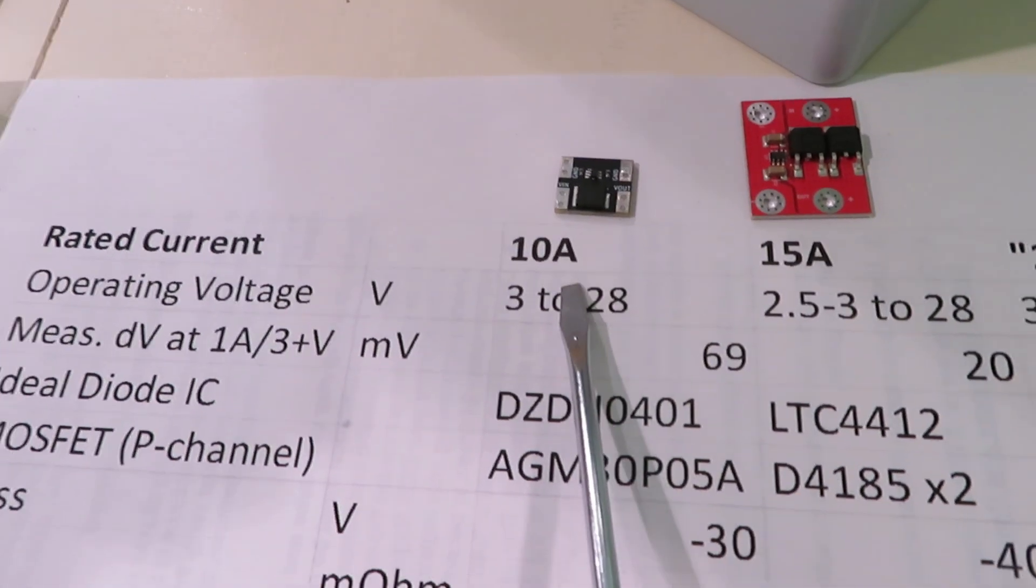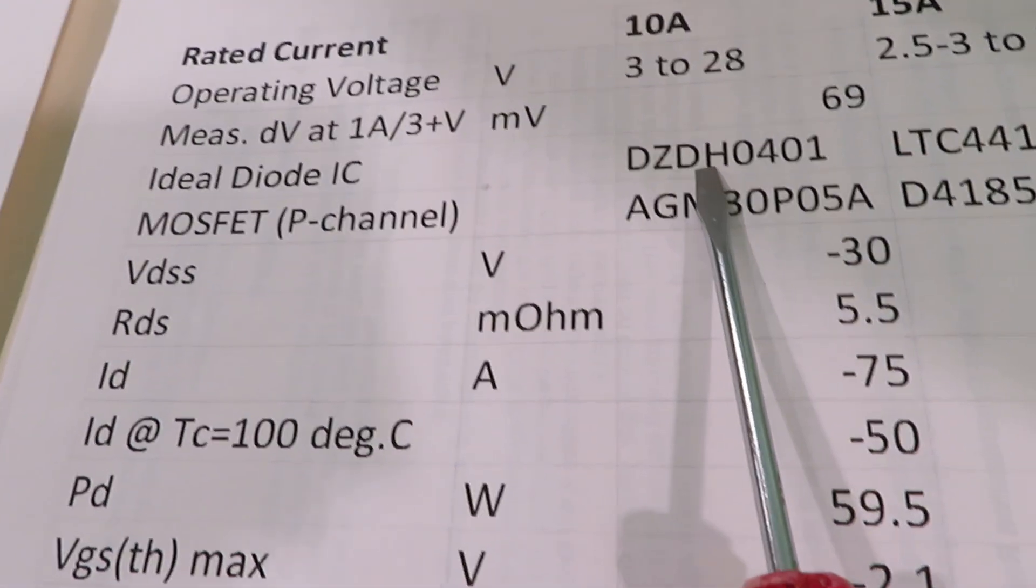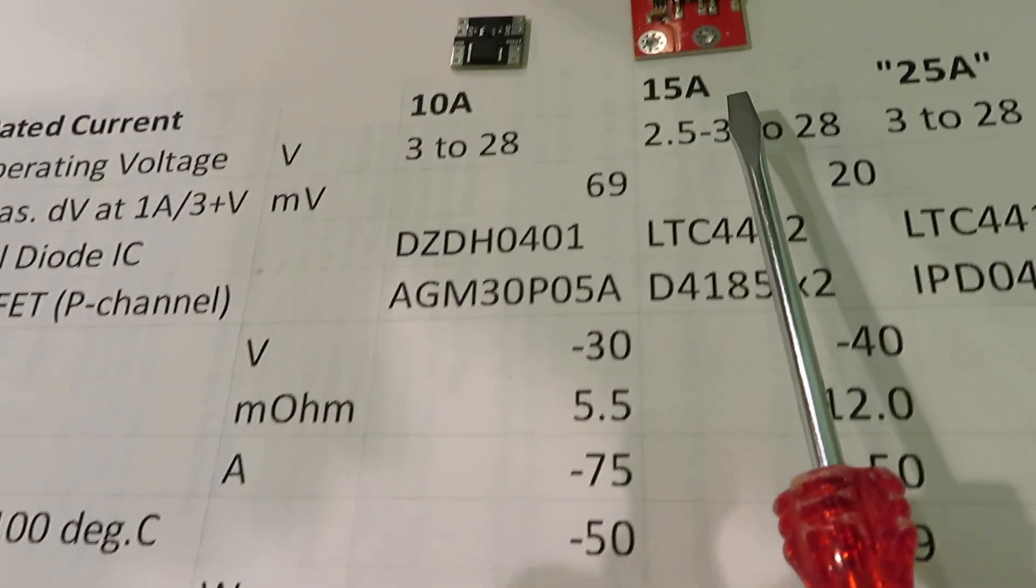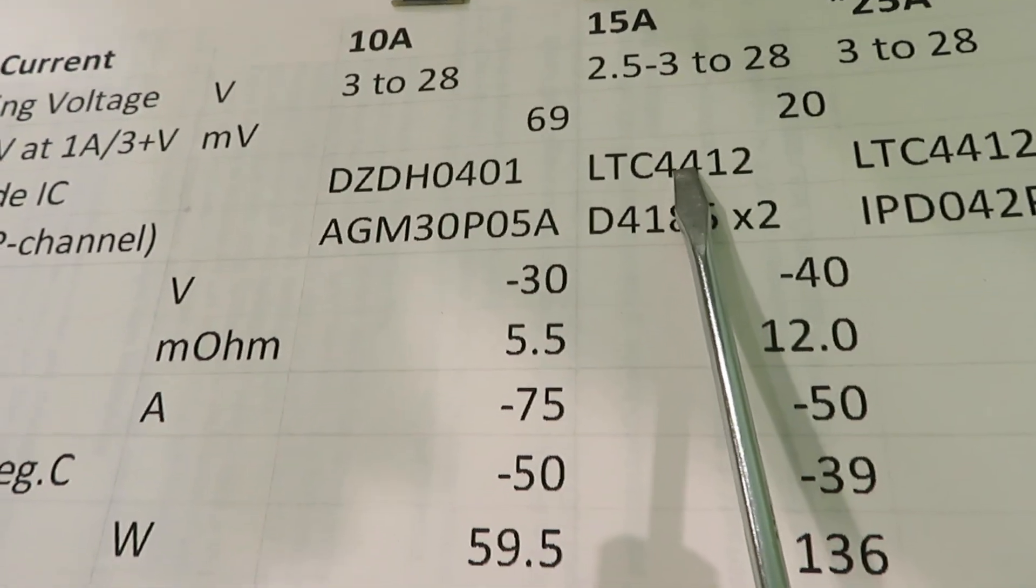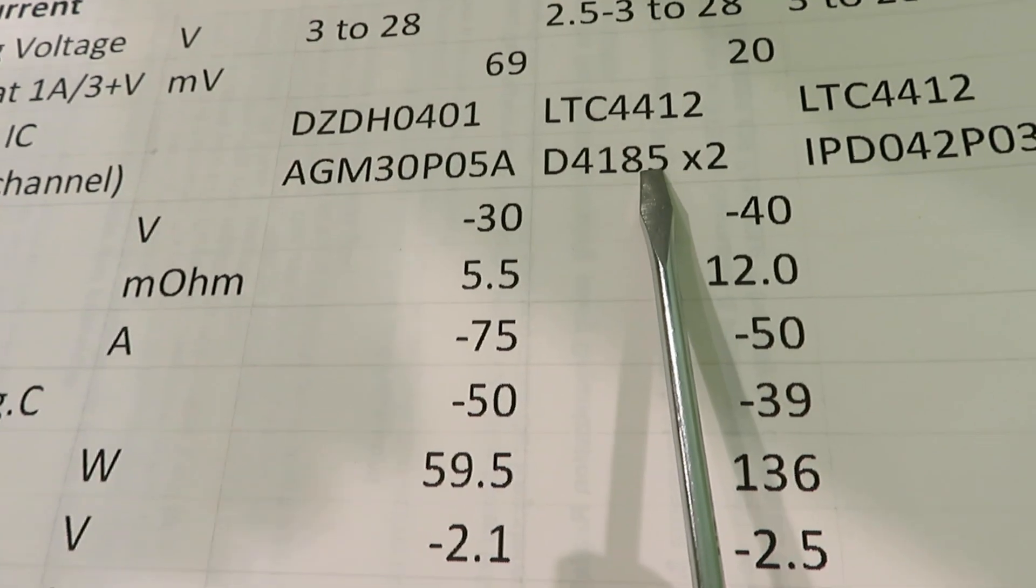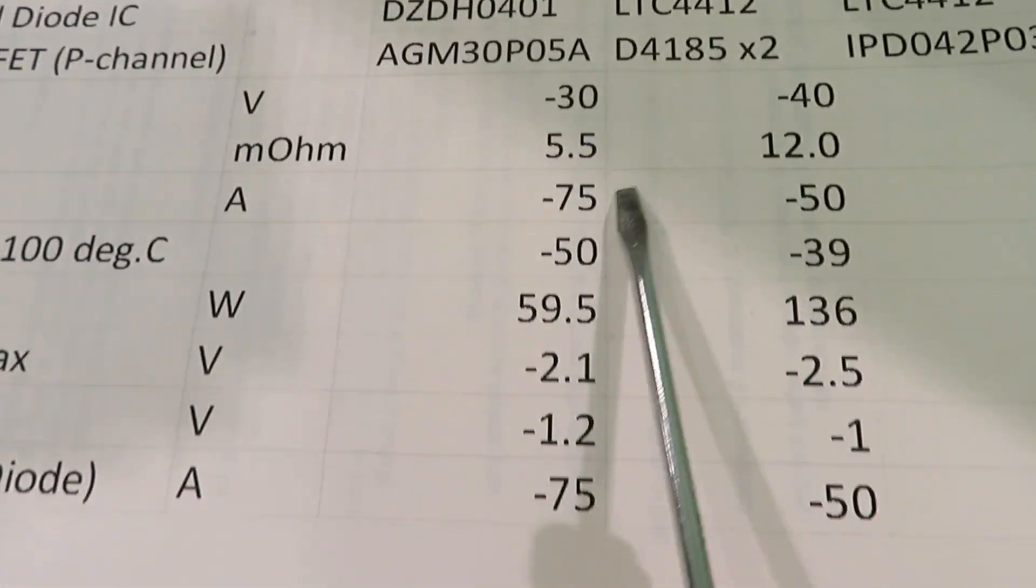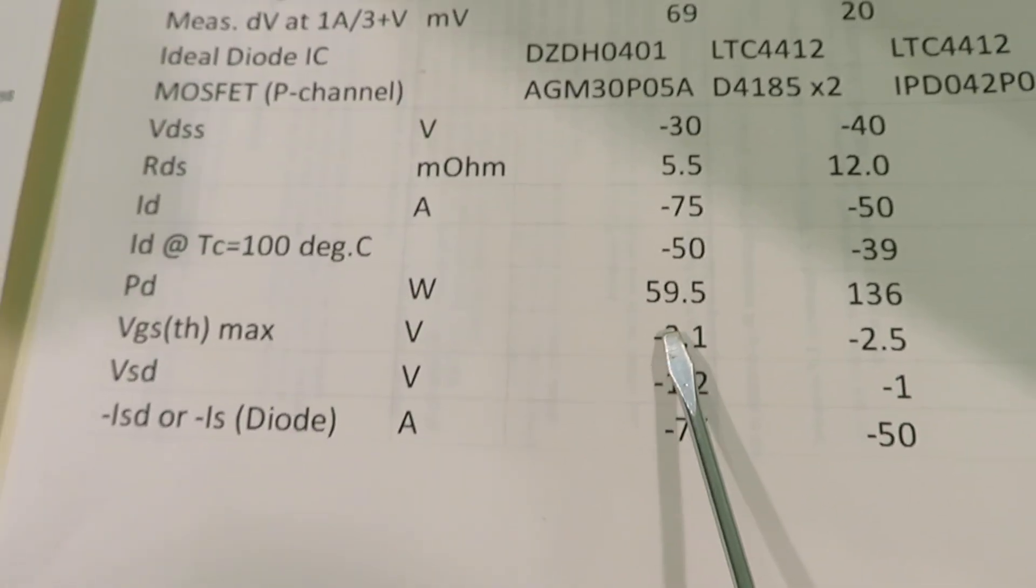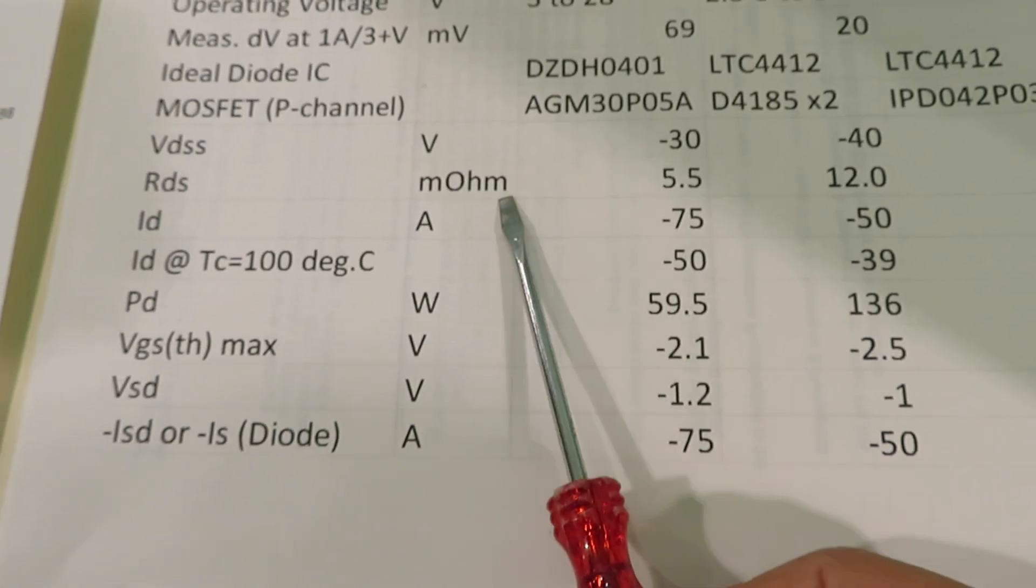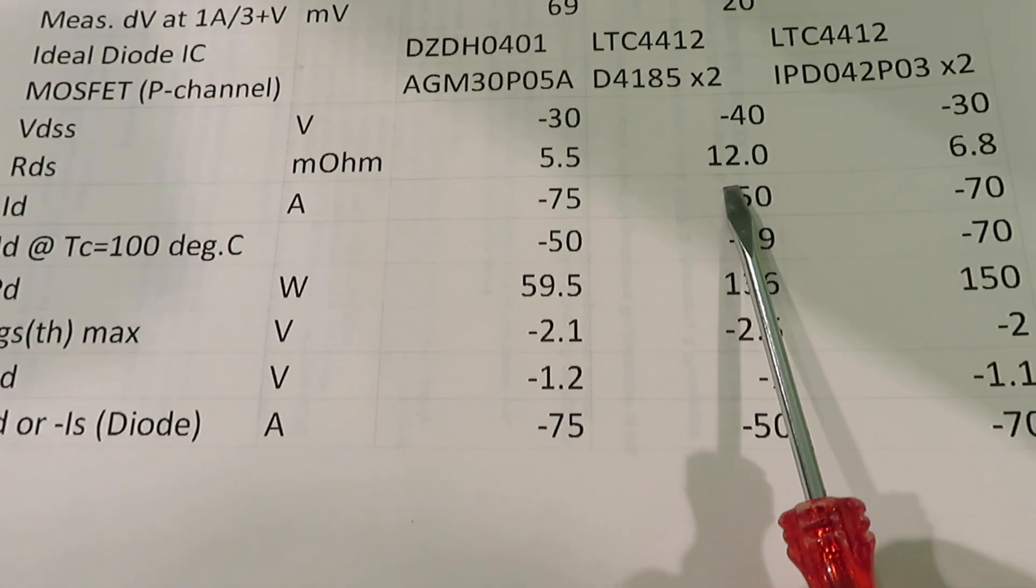So this is the 10 amp diode and this is the IC that drives the diode and this is the MOSFET in the diode. This is the 15 amp. This is the IC to drive the diode and this is the MOSFET, two of them. There are two MOSFETs to drive the diode. These are the characteristics of the diodes. This is 5.5 milliohm, the resistance from drain to source, and this is 12 milliohm.